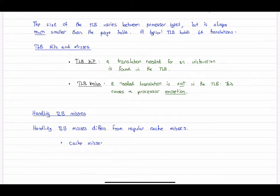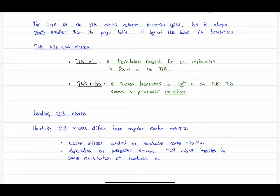For example, cache misses are handled by hardware, cache circuits. Meanwhile, the TLB, depending on the processor type being used, the processor design, might use some combination of hardware and software in the form of intervention by the operating system.